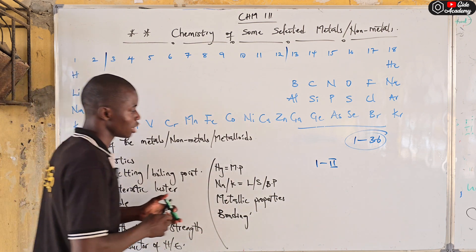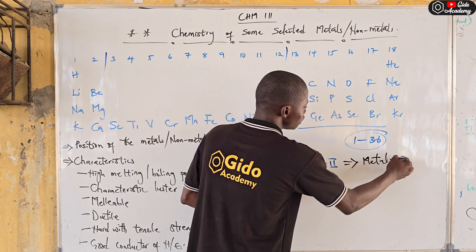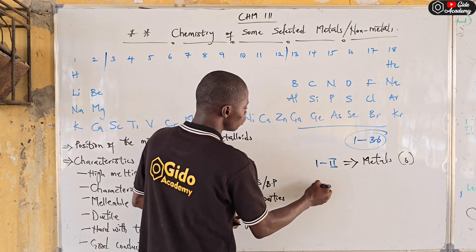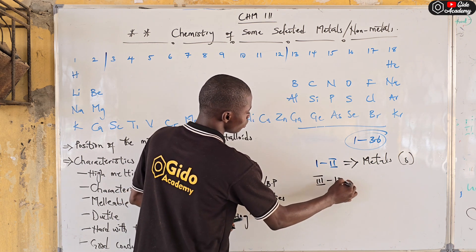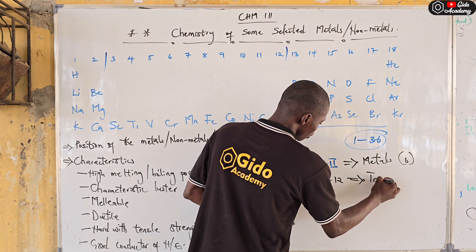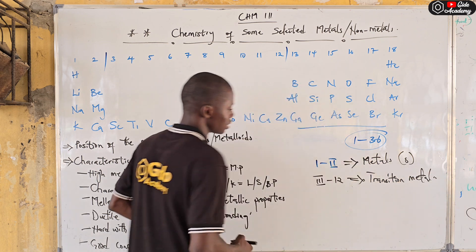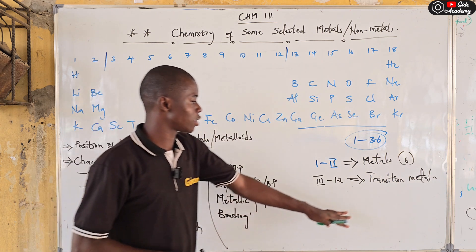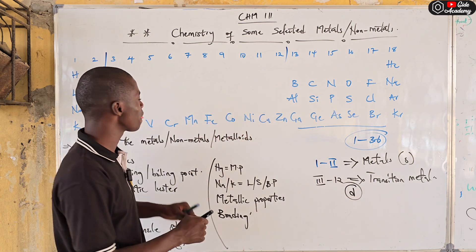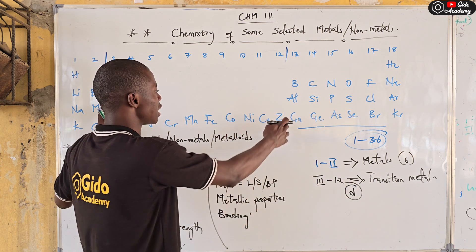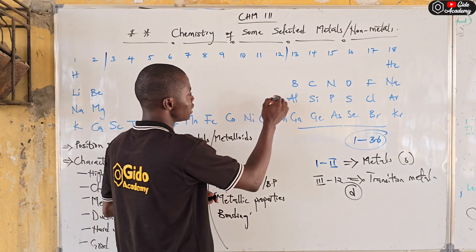From group three down to group twelve we call them the transition elements. So group one and group two are majorly metals, which is the s-block in the periodic table. From group three to group twelve we call them the transition elements or transition metals, and these transition metals are found in the d-block of the periodic table — they sit between the s-block and the p-block.